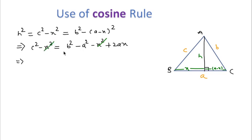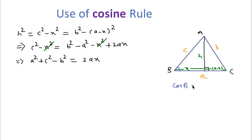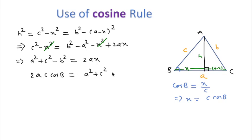Rearranging, we get a² + c² − b² = 2ax. In this triangle, cos B = base over hypotenuse = x over c, so x = c·cos B. Substituting the value of x, we can write 2ac·cos B = a² + c² − b².